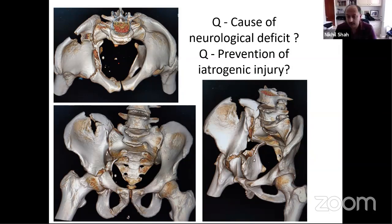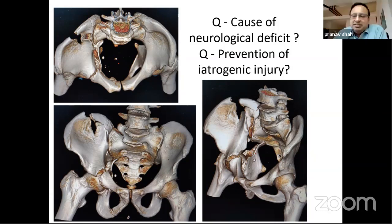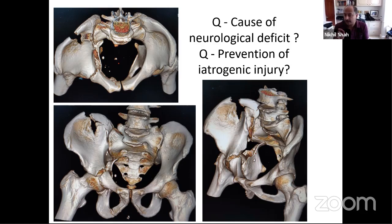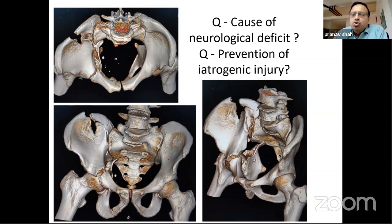An additional important point: the superior gluteal vascular bundle often ruptures in these injuries and clots by the time the patient reaches hospital — stopping the bleeding. During surgical manipulation it can start bleeding again, so prophylactic angiography may be helpful. If a flare is seen indicating arterial or venous rupture, embolization before surgery is advisable. Having a vascular colleague available is also recommended.